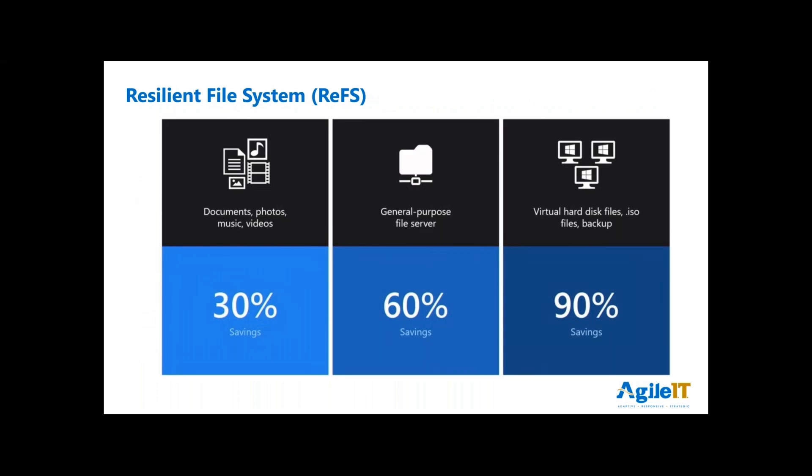ReFS was first introduced in 2012 R2 — three releases ago now that it's 2019. It's been performance-tested quite a bit, especially when they released Storage Spaces Direct on 2016 with all the clustering stuff that Microsoft is now doing as a play on SANs. It's really gotten very good at storage. The next evolution is to perfect their ReFS system, which is the next evolution of NTFS.